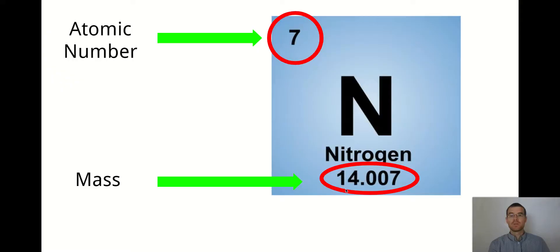remember that the mass is protons plus neutrons, and therefore it's going to be a bigger number. So the smaller number out of the two is always the atomic number. The bigger number is always the atomic mass. That's how you can distinguish between the two.